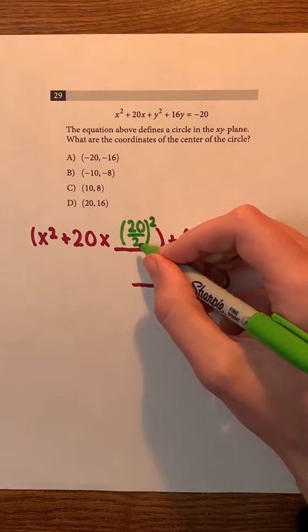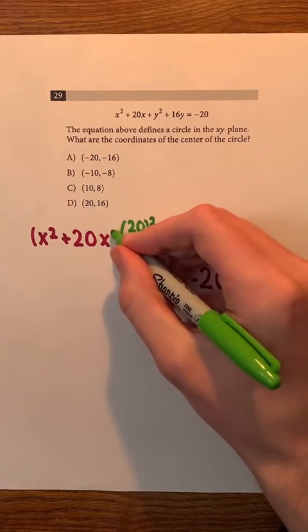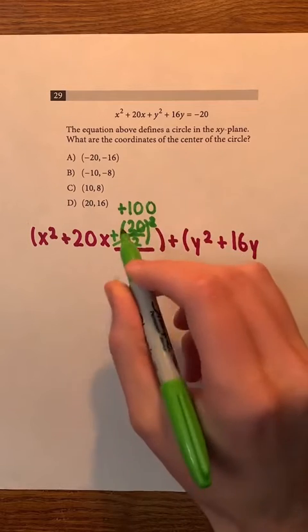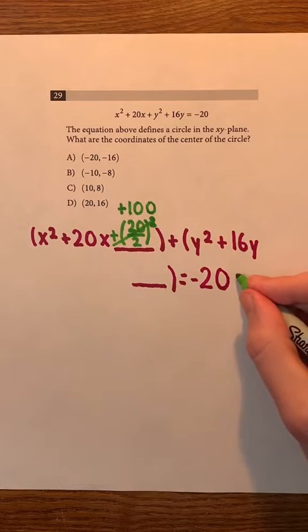20 divided by 2 is 10, and 10 squared is 100. Since we added 100 to the left side of the equation, we're gonna add it to the right side of the equation.